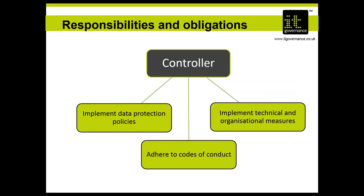The controller, having determined what data to collect and the means and purposes of processing, must put in place appropriate data protection policies and procedures which drive the technical and organizational measures that will actually protect the organization. GDPR is very specific in saying controllers must have data protection policies and, having created them, must carry them out. This speaks to embedding data protection by design and by default, and embedding accountability in the processing operations of the organization. Controllers are required to implement appropriate technical and organizational measures to protect personal data, which include not just information security controls but also data subject access request processes and privacy notices.